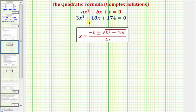The first step is to identify the values of a, b, and c which we'll use in the quadratic formula, where a is the coefficient of x squared, so a equals 3, b is the coefficient of x, so b equals 18, and c is the constant term, therefore c equals 174.